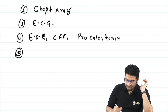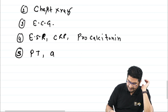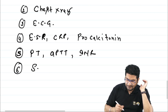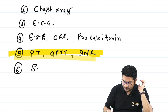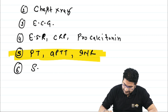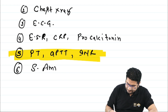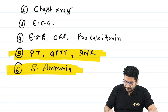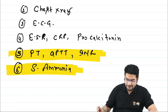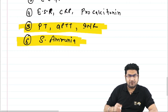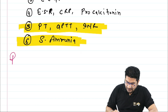Check PT, APTT, and INR because patients can develop coagulopathy and are at risk of bleeding. The key investigation is serum ammonia, which will be elevated. The investigation of choice is serum ammonia.